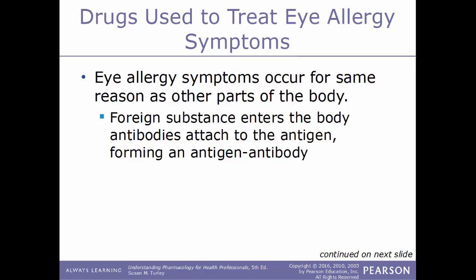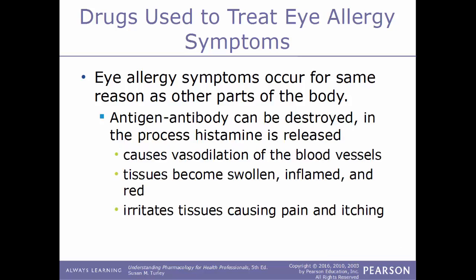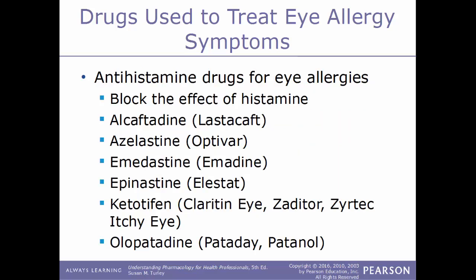Now we'll move on to drugs that are used to treat eye allergy symptoms. Eye allergy symptoms occur because a foreign substance enters the body, antibodies attach to that antigen and form an antigen-antibody complex. During this process, histamine is released. Histamine causes vasodilation of the blood vessels, so tissues become swollen, inflamed, or reddened, causing pain and itching. There are various types of antihistamine drugs used for eye allergies, and these work because they block the effects of histamines.